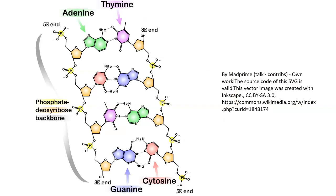When these replicate and come together, we always have to know which end is the five prime and which end is the three prime. It's like reading a sentence — you're only supposed to read it in one direction. If you read it backwards, sometimes it doesn't make a whole lot of sense.